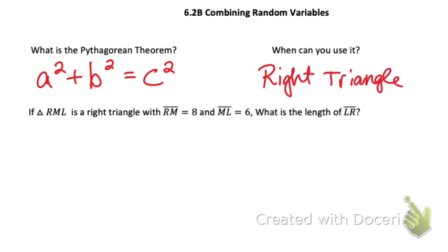You cannot use it for a scalene triangle, an isosceles triangle, any other triangle. It has to be a right triangle. So, I have this question for you: if we have triangle RML, it's a right triangle with RM = 8 and ML = 6, what is the length of LR?